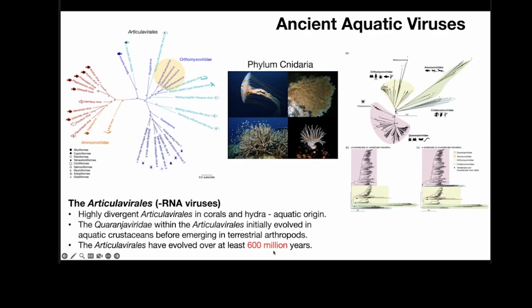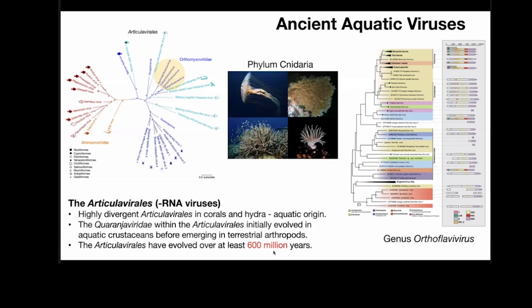The same is also true of the flaviviruses — iconic disease-causing viruses like dengue, Zika, and yellow fever. We normally thought they were mammalian, but metagenomics is finding them in more and more diverse things. They're actually also found in cnidarians like coral and sea stars, which tells us these flaviviruses are probably 700 to 800 million years old — very, very ancient. That's true of many RNA virus families.